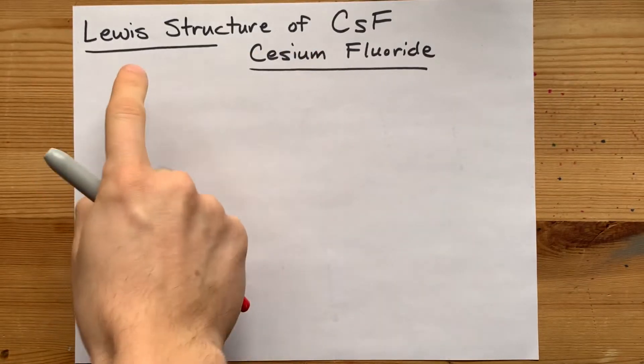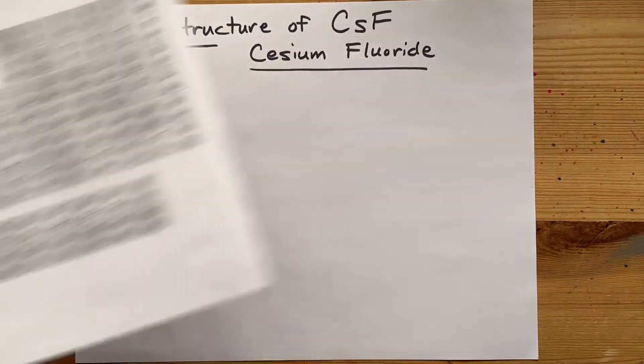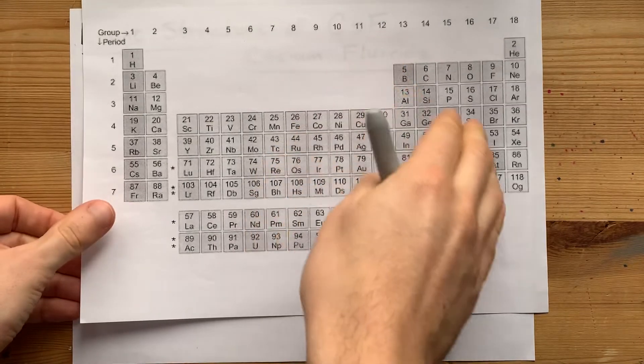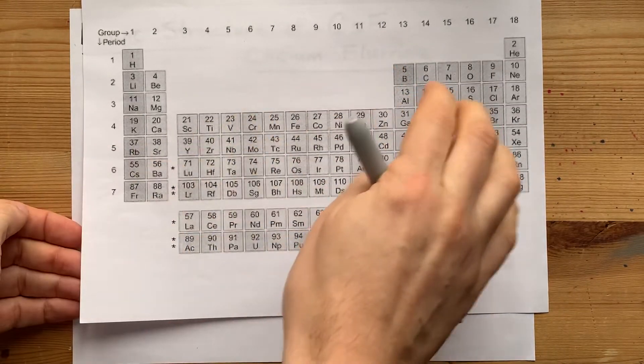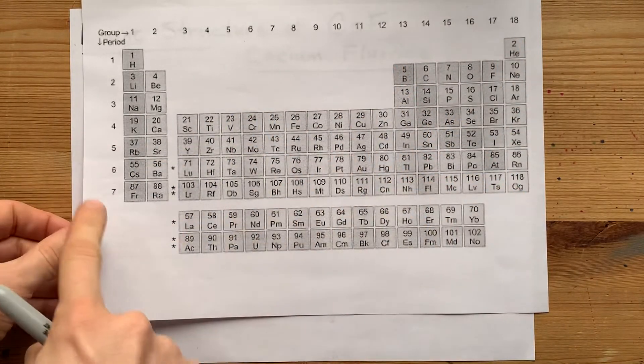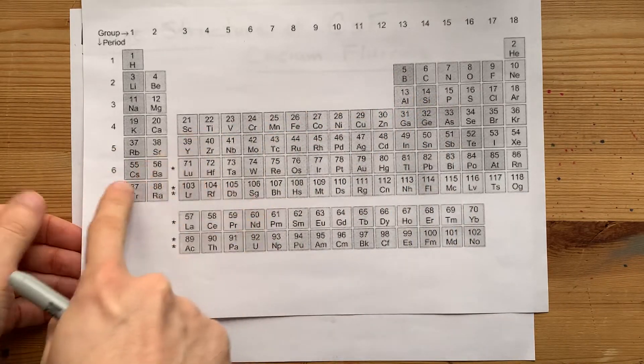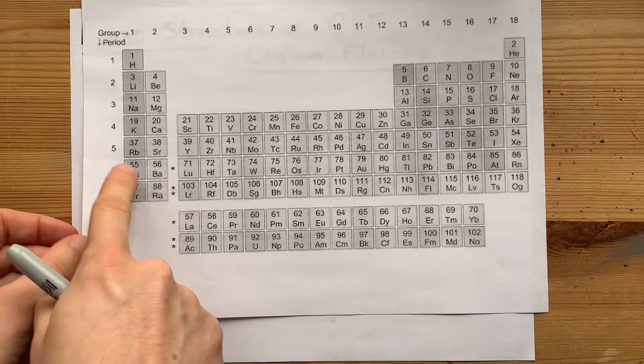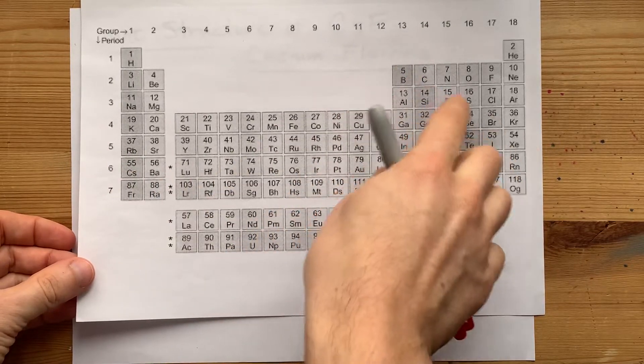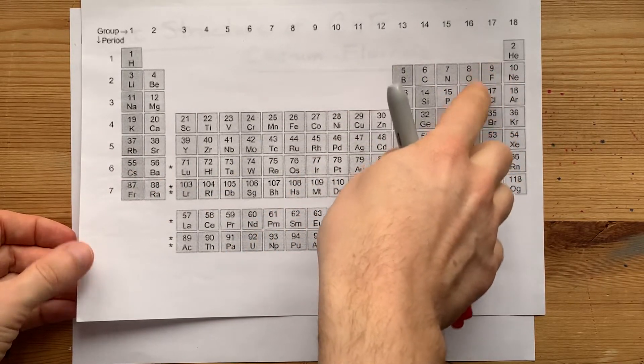A request from a viewer: Lewis Structure of cesium fluoride. The staircase here separates metals from non-metals. Cesium is very metallic - it's almost as far to the left and down as you can get. Cesium is a metal. Fluorine is a non-metal in the top right.